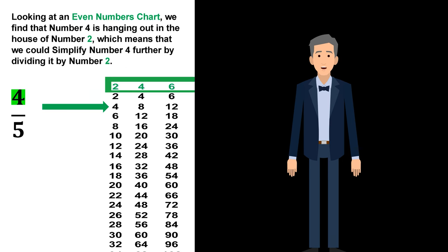Looking at an even numbers chart, we find that number 4 is hanging out in the house of number 2, which means that we could simplify number 4 further by dividing it by number 2.